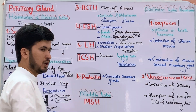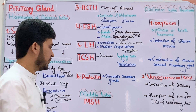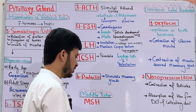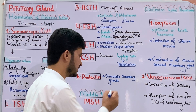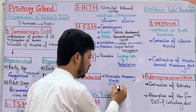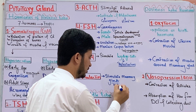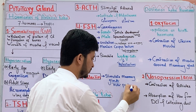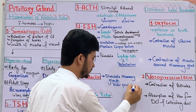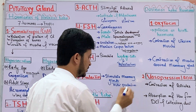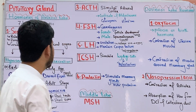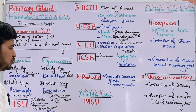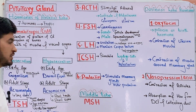Prolactin is another hormone secreted by the anterior lobe. It stimulates the mammary gland, causing milk production. These are the main hormones secreted by the anterior lobe of the pituitary gland.